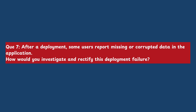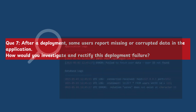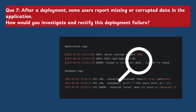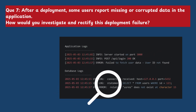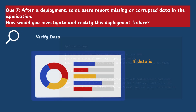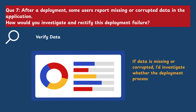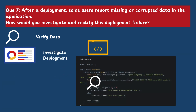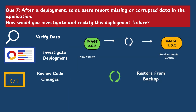Question 7: After deployment, some users report missing or corrupted data in the application. How would you investigate and rectify this? I would start by checking the application and database logs for errors related to data retrieval or corruption. Next, I would verify if data migrations were executed correctly during the deployment. If any recent configuration changes impacted data handling, I would compare the old and new configurations. If the issue still persists, I would consider rolling back to the last stable version.